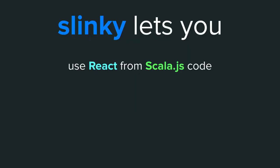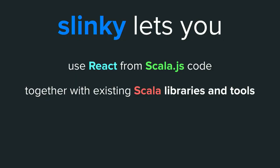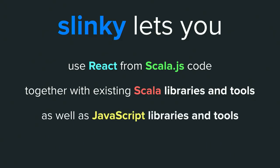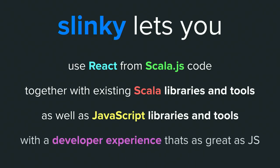So that's Slinky — a framework for writing React.js applications in Scala. Slinky lets you use React from Scala.js code — that's its core purpose. It comes with additional features: a focus on making sure that code written for React.js can still easily use Scala libraries. It also works with existing JavaScript libraries — there's a lot of software already developed in the JavaScript community for React.js, like React Router for routing between pages.